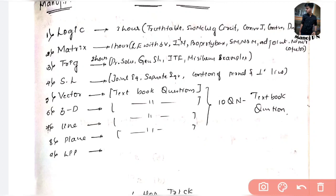Next is matrix. In every KCET paper you will definitely find one or two questions in matrices and determinants — determinants is a subset of matrix. In matrix, what you particularly need to work on is linear equations with three variables, inverse of a matrix, property-based questions, symmetric and non-symmetric matrices, adjoint, minors, and cofactors.